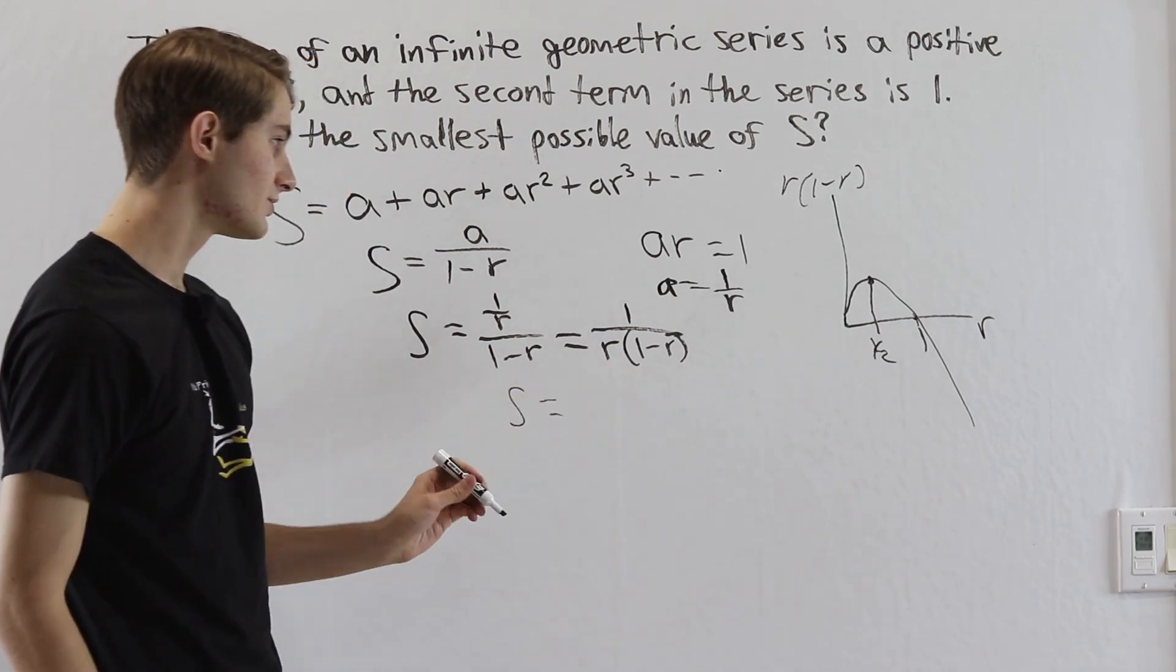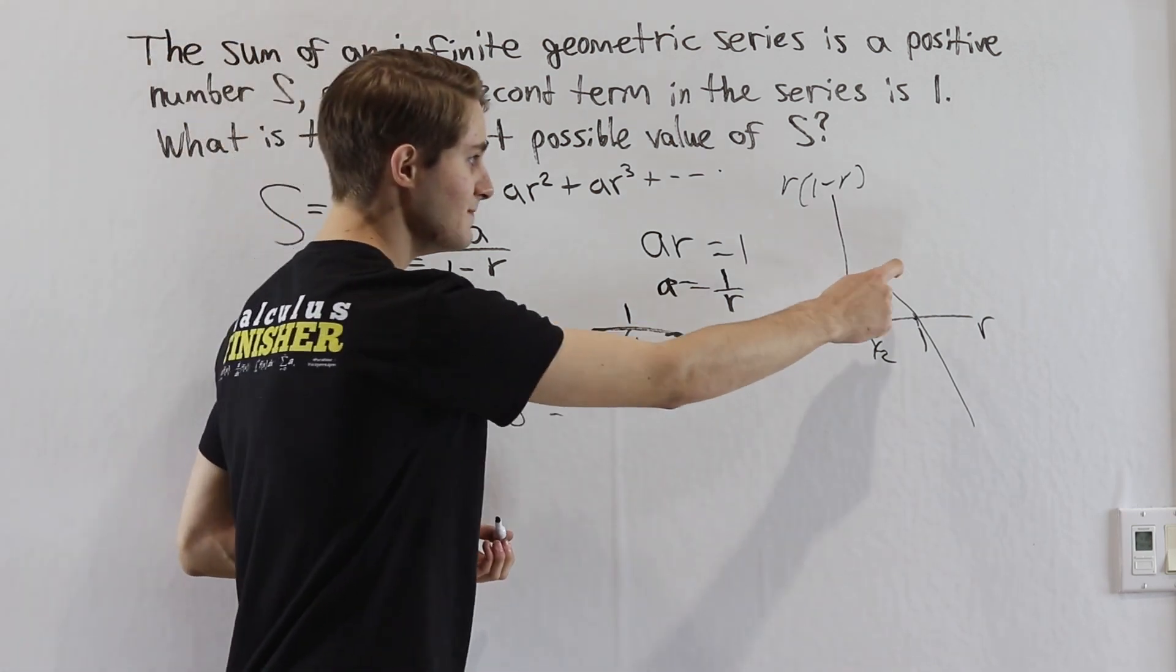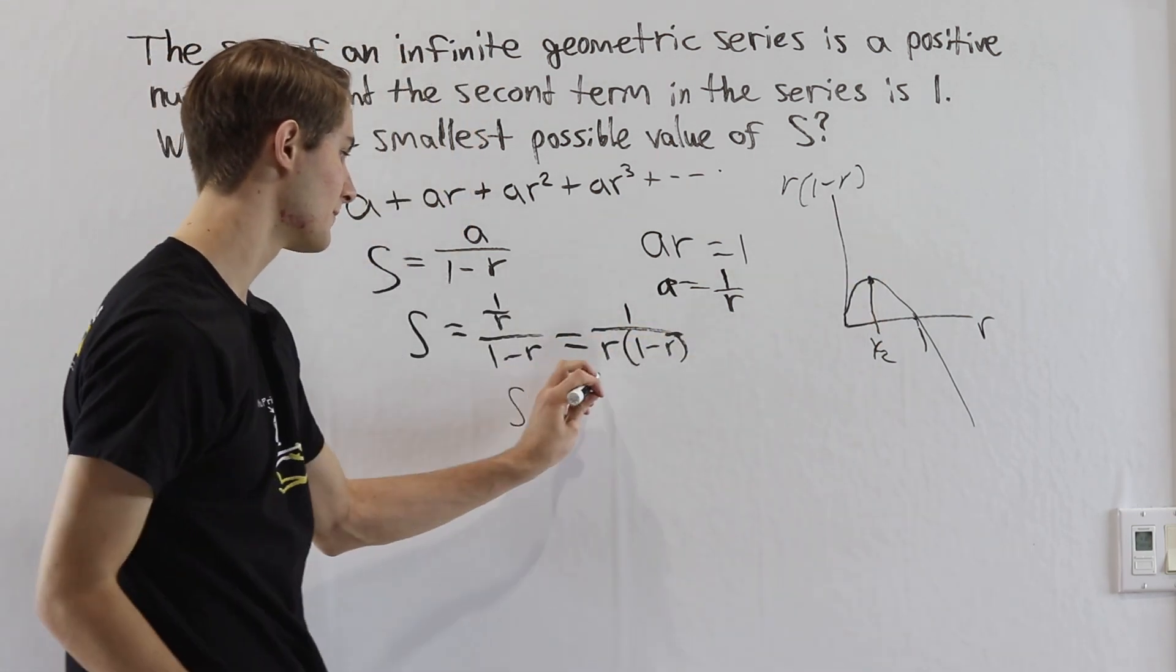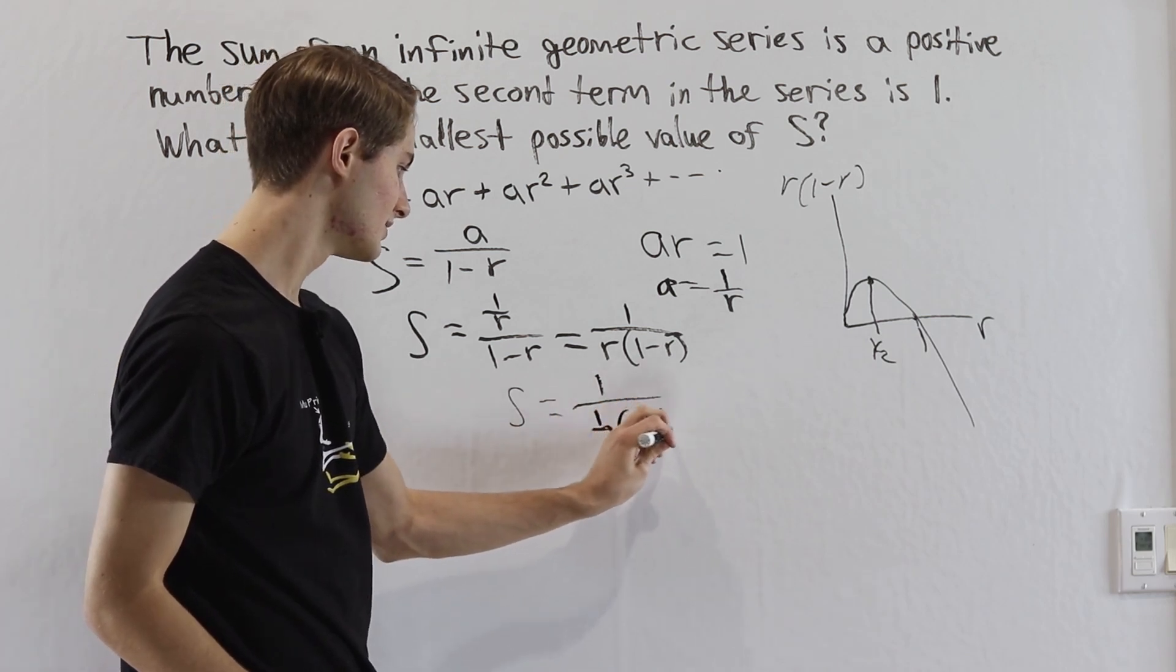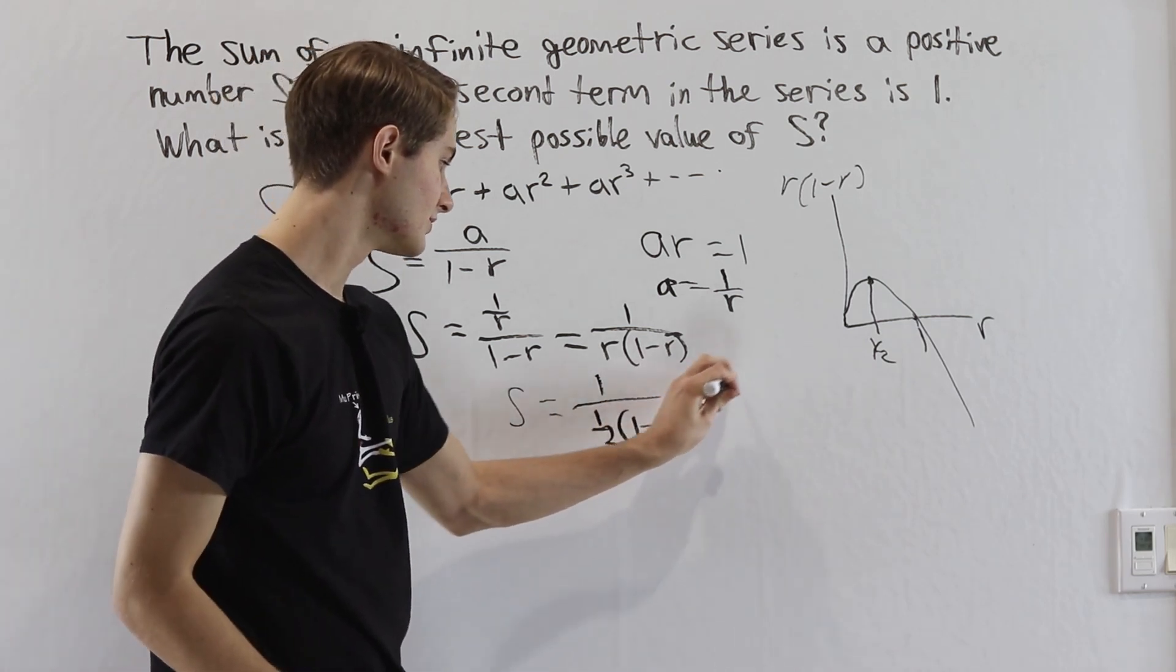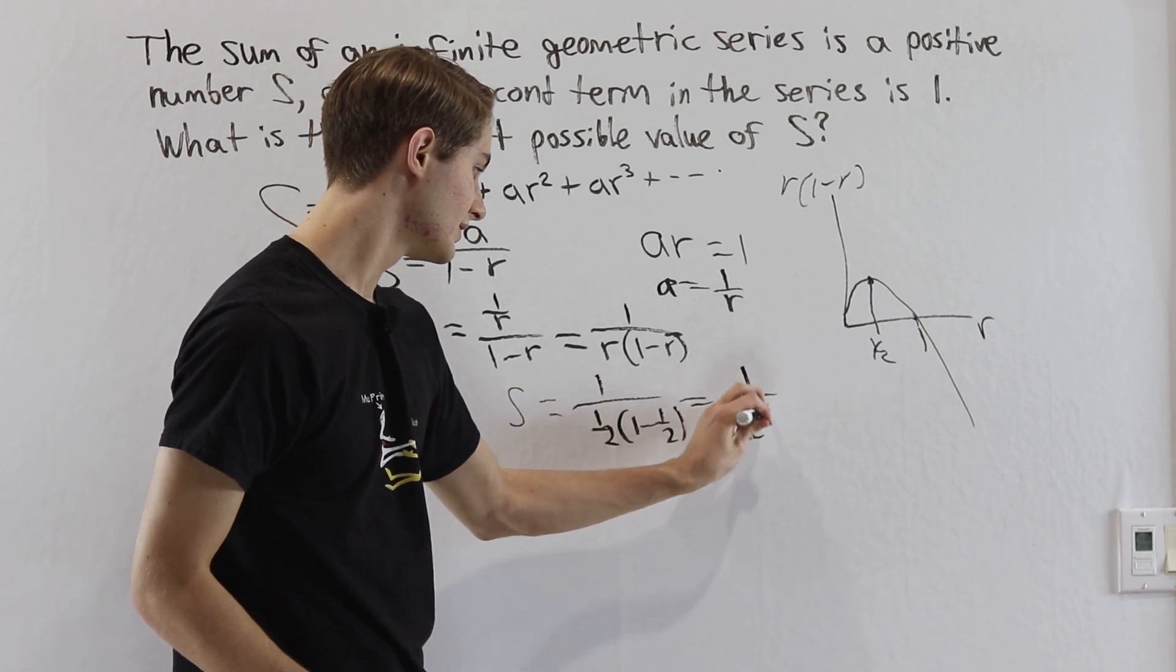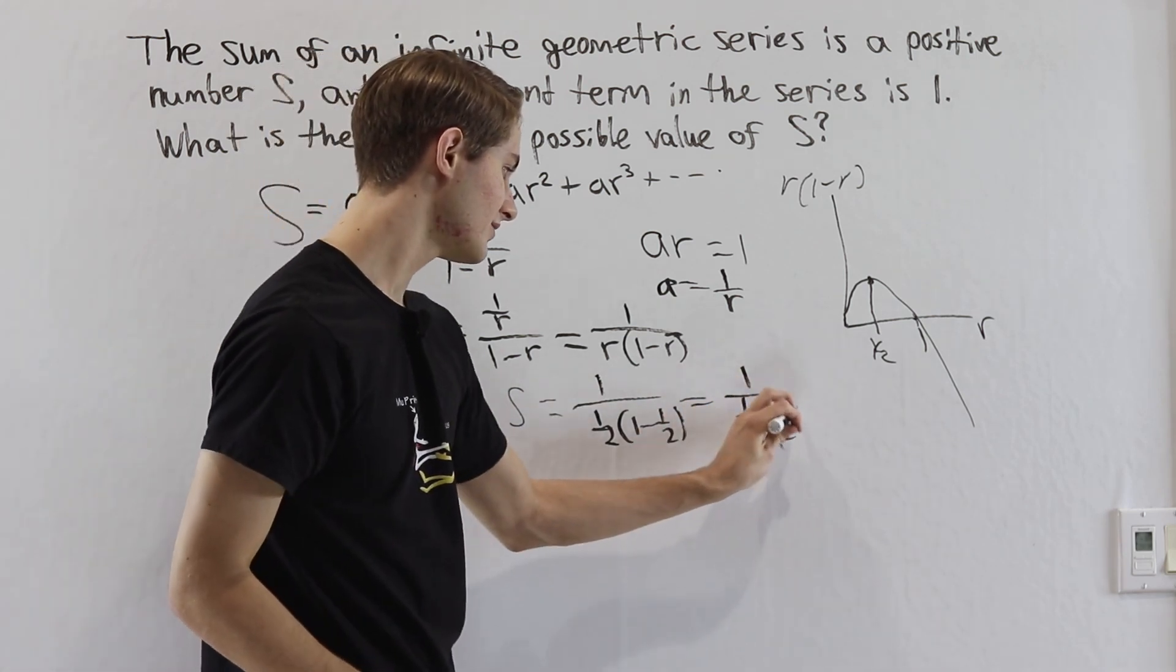We know that the smallest value of our s is going to be when we have the biggest value of this thing on the bottom. So we have 1 over 1 half times 1 minus 1 half. This is going to be 1 over 1 half times 1 half.